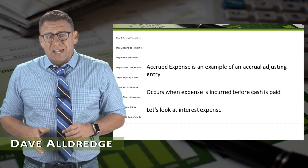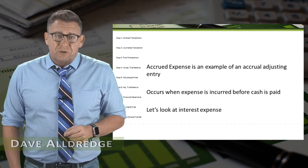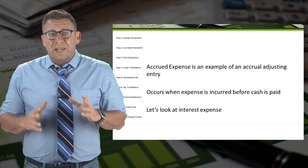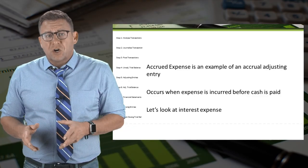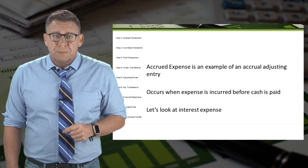Accrued expense is an example of an accrual adjusting entry. It occurs when an expense is incurred before cash is paid.